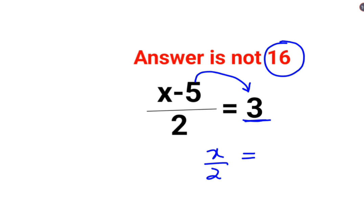x upon 2 equals to 3 plus 5. And then they did this. 3 plus 5 is 8. And this 2 gets multiplied on this side. So gets you 16.